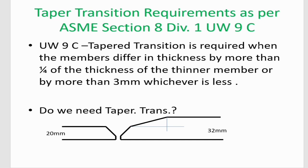The next question is: does taper transition require all the time when we join two dissimilar thickness materials? The answer is no. It only requires when it satisfies the requirement given in UW-9C of ASME Section 8, Division 1. As per UW-9C, taper transition is required when the members differ in thickness by more than one-fourth of the thickness of the thinner member, or by more than 3 mm, whichever is less.